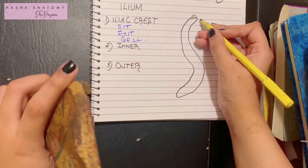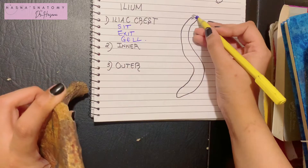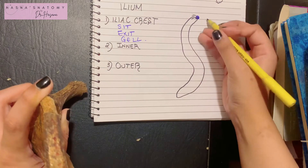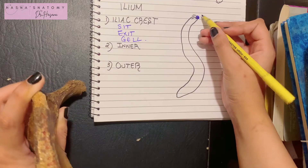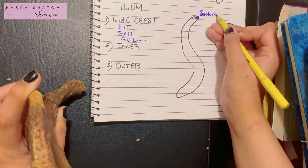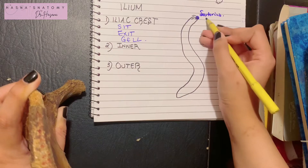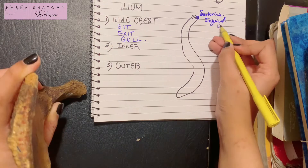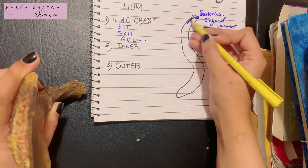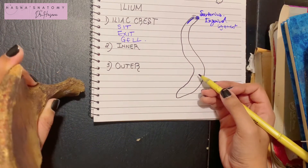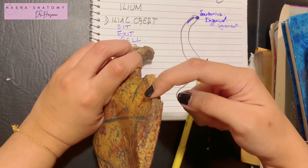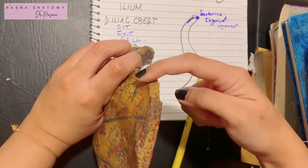SIT refers to the anterior superior iliac spine — the most anterior end of the iliac crest. S stands for the origin of the sartorius muscle, I stands for the lateral end of the inguinal ligament, and T stands for the tensor fascia latae. So SIT gives us sartorius, inguinal ligament, and tensor fascia latae.